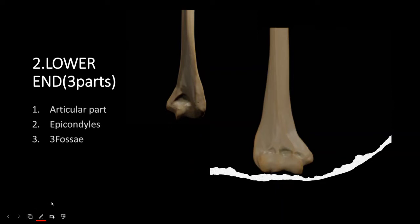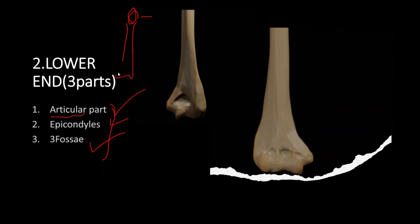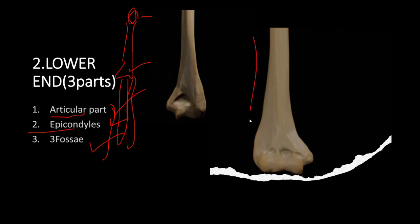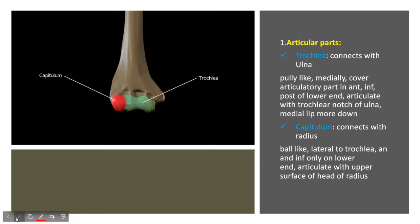The lower end of the humerus has three parts: articular parts, epicondyles, and three fossae. The articular parts articulate with the radius and ulna. The head of the humerus articulates with the glenoid cavity above, while distally the lower end articulates with the radius and ulna at the elbow joint.